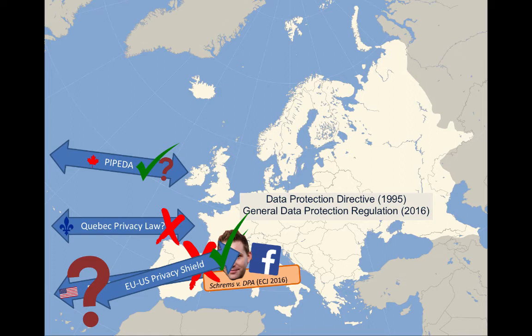When Safe Harbor was struck down, it threw things into confusion because companies were relying on it. A successor mechanism called the Privacy Shield was quickly put in place; it's similar to Safe Harbor and has survived court challenges so far, though ongoing challenges remain. The European Commission has said it needs to be renegotiated and pointed to weaknesses — including companies self-certifying but not actually following the principles in practice, and issues around bulk state surveillance. Under the new GDPR, adequacy decisions will be reviewed periodically. There are questions about whether Canada's PIPEDA will withstand scrutiny; a couple of weeks ago, proposed amendments to PIPEDA were announced to bring it more in line.